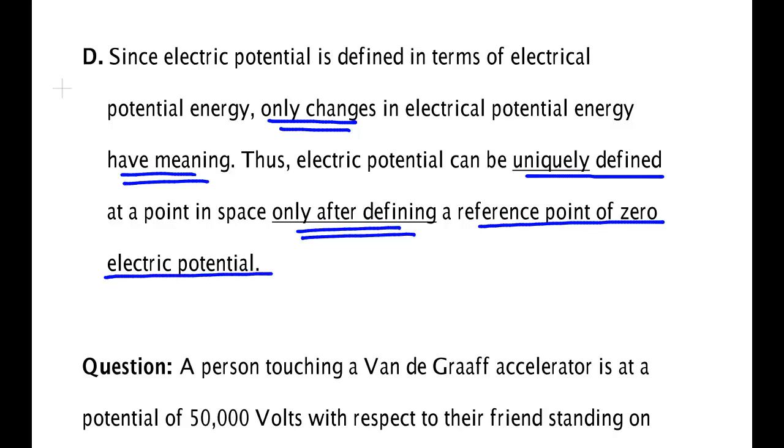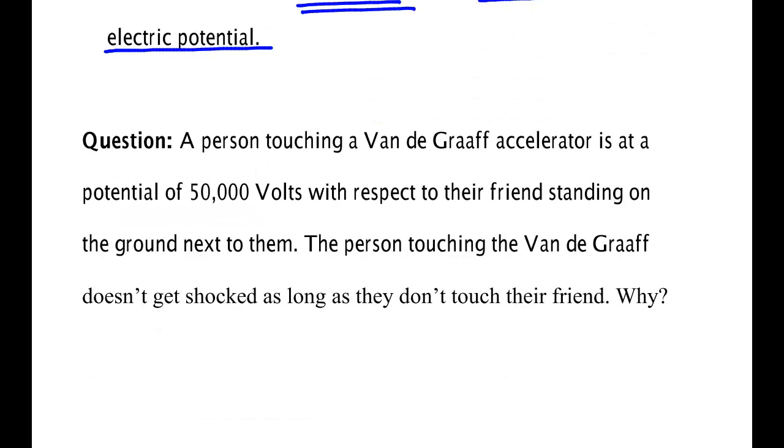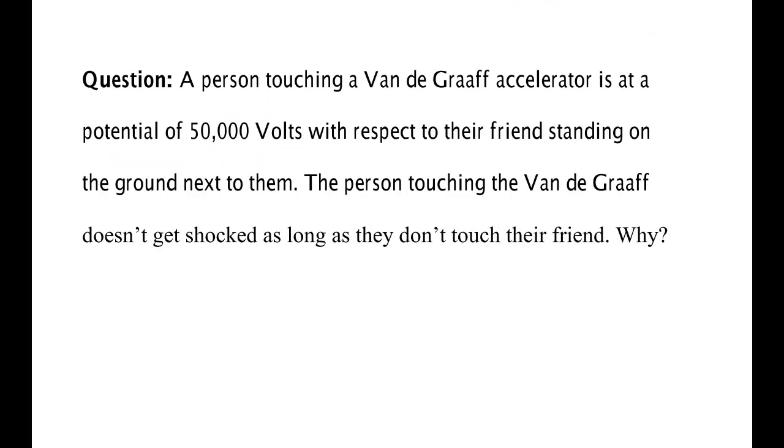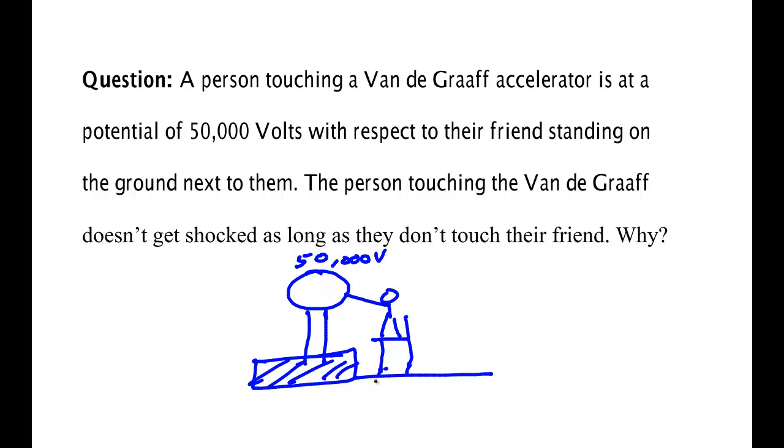So for instance, people often say something like this. A person is touching a Van de Graaff at a potential of 50,000 volts. Now there's this Van de Graaff accelerator like the one I had in class. And this person is on some sort of an insulated chair usually. And they got their hand touching it. And we say this is 50,000 volts. But what does that mean? What it means is that if you call this zero, that's at 50,000. It's 50,000 higher than whatever you call this to be.